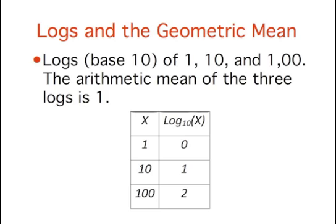To compute the anti-log of 1, you take the base of the logarithm that you used (10 in this case) and raise it to the first power. Since 10 to the first is 10, the anti-log of 1 is 10. This is the same answer we got by multiplying the three numbers together and taking the cubed root.